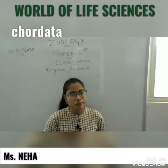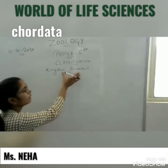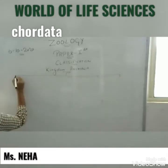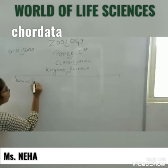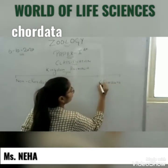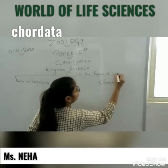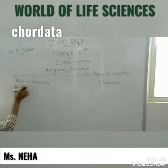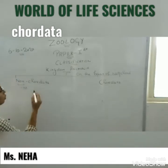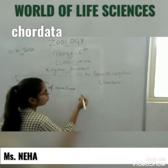On the basis of presence or absence of the notochord — in which phylum the notochord is present or in which phylum it is absent — Kingdom Animalia is classified into two phyla: one is the Non-Chordates and second is the Chordates.